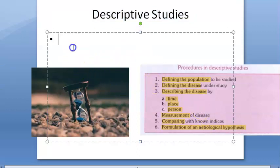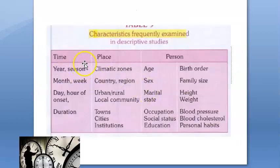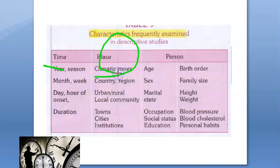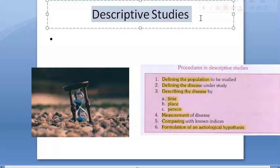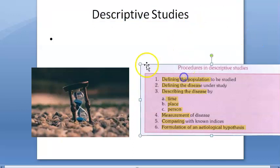Descriptive study is the first phase of epidemiological investigation. You will just observe the distribution of the disease, identify its characteristics, and guess what the association could be. There are three things: time distribution, place distribution, and person distribution. You will observe when this disease is occurring, where it is occurring, and who is getting the disease. This is an observational study.